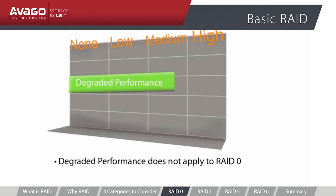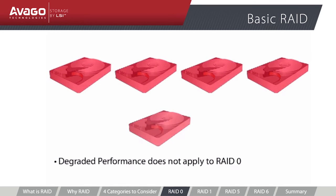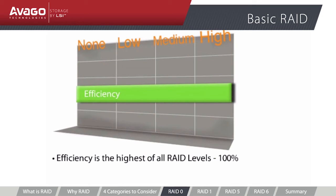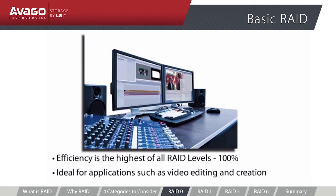Degraded performance does not apply with RAID Zero. If any one drive fails in a RAID Zero array, the entire volume becomes unusable. Efficiency is the highest of all RAID levels — RAID Zero is 100% efficient, meaning all drive capacity is available for user data; five 2TB drives equals 10TB of available storage. The one-fail, all-fail nature of RAID Zero increases the likelihood of system downtime and data loss. However, RAID Zero's speed makes it ideal for applications like video editing where other copies of the source material exist.